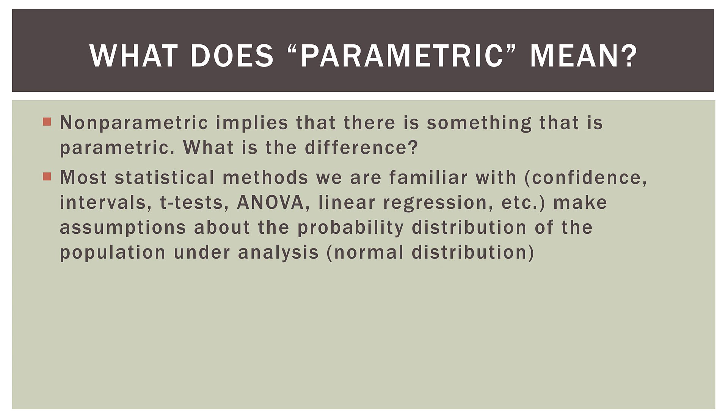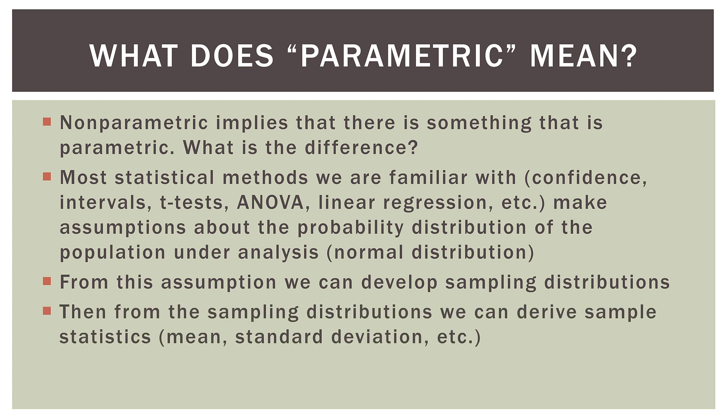So a lot of the assumptions underneath these things we are more familiar with is the assumption that the observations are normally distributed. From this assumption, we can develop sampling distributions. And then from the sampling distributions, we can derive sample statistics, such as the mean, standard deviation, and so on and so forth. So parametric methods are a family of statistical methods that most often make the assumption that the underlying observations are normally distributed.